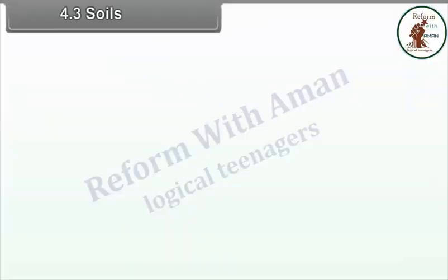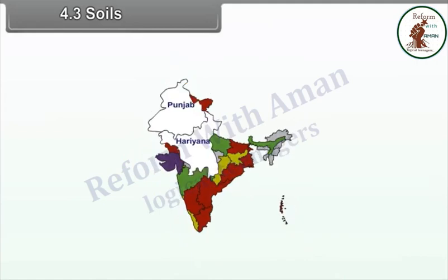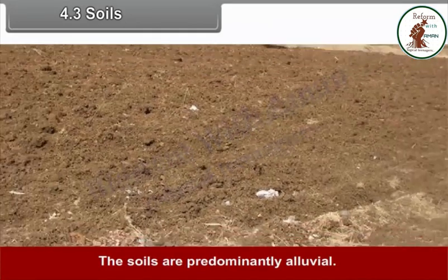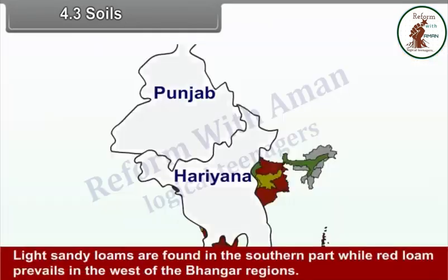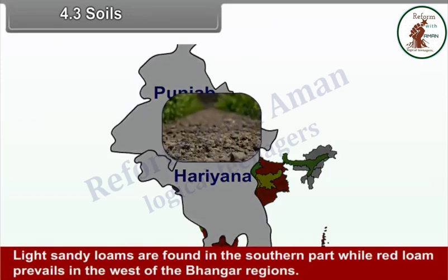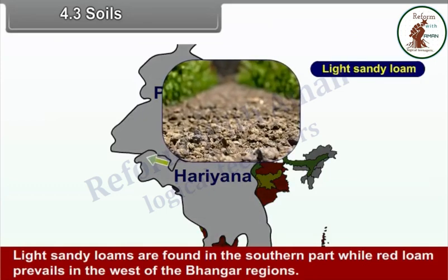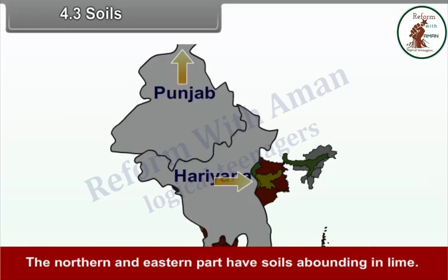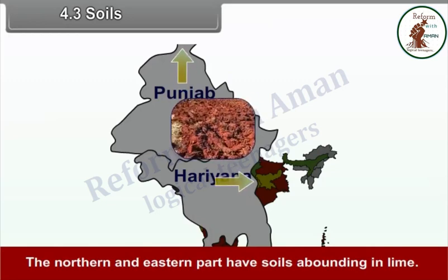4.3 Soils. The soils are predominantly alluvial. Light sandy loams are found in the southern part, while red loam prevails in the west of the Bhangar regions. The northern and eastern parts have soils abounding in lime.